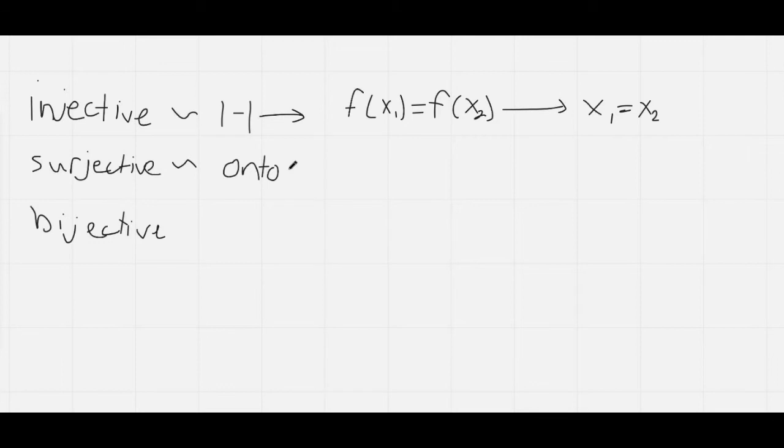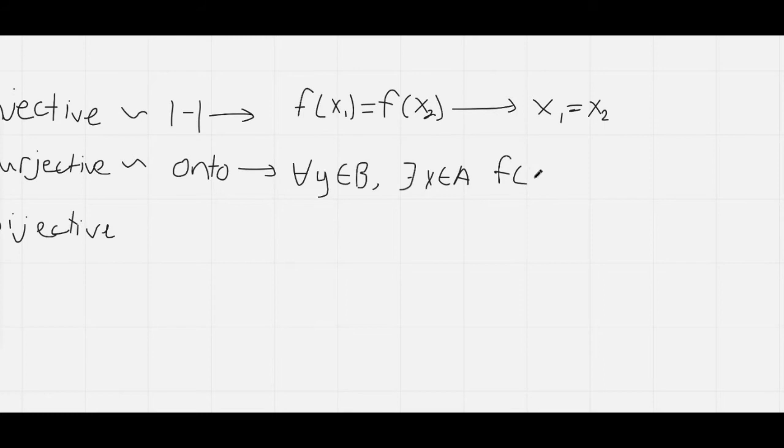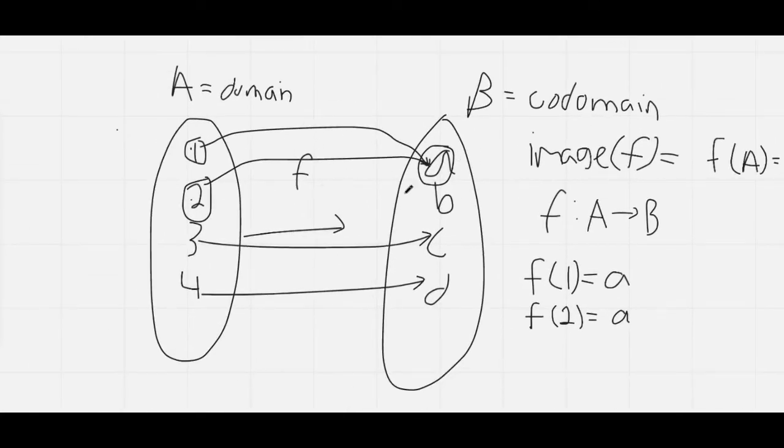A surjective function is a function in which every value of the codomain gets mapped onto, which is why it's called an onto function. Which basically means that for all elements Y in the codomain, then there exists an X in the domain such that F of X is equal to Y. So here our function is not surjective because B does not have an element in A which that element is mapped to B.